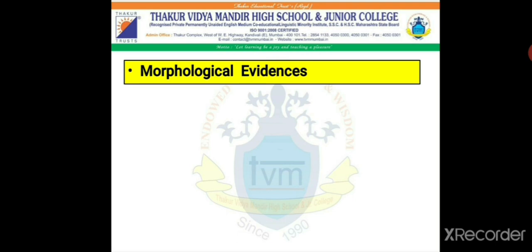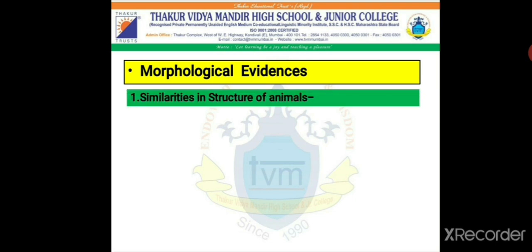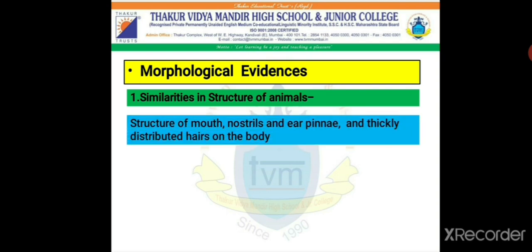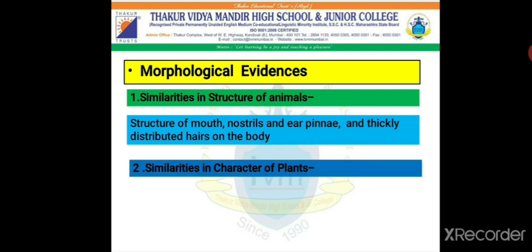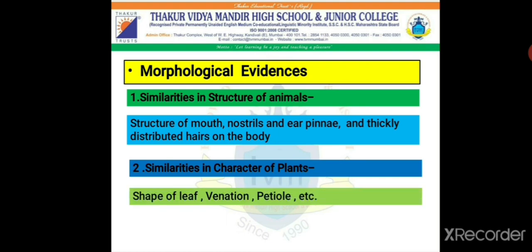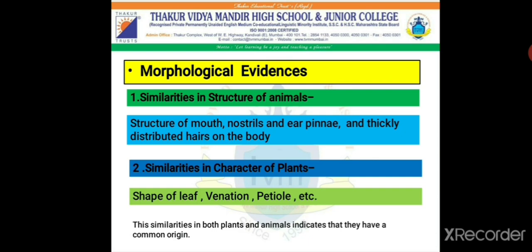Let us recall morphological evidences in plants and animals. In animals, we notice the same structure of mouth, nostrils, ear pinna, and thickly distributed hairs on the body. In plants, similarities in the characters include shape of leaves, venation, petiole, etc. These evidences tell us that they have a common origin. That is your first proof: morphological evidences.